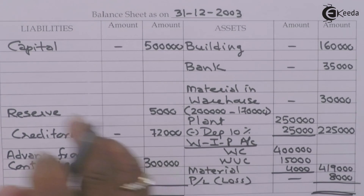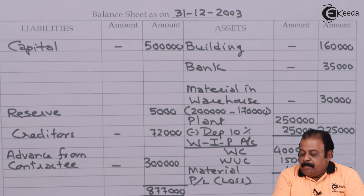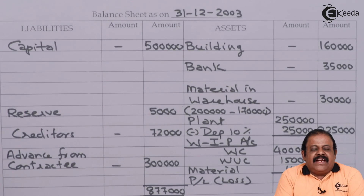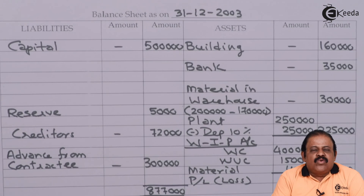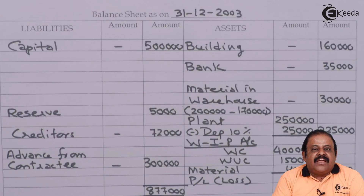The balance sheet totals 8 lakhs 77,000 on both sides, confirming it is balanced. In this question we have learned how to distribute plant depreciation between the contract account and profit and loss account, and how to close out the balance sheet. Thanks for watching — stay tuned with Ikeda and subscribe to our channel.